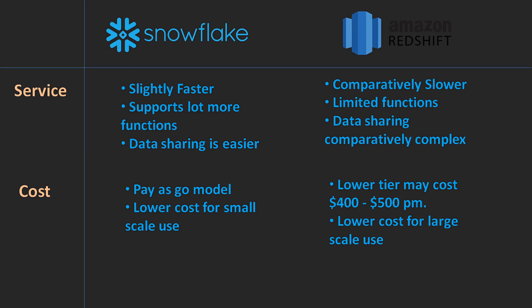This is where Amazon Redshift has an advantage. Even the lower tier may cost around 400 to 500 dollars per month for just one node. But when you're using it for large-scale storage with petabytes of data, Amazon Redshift will cost you less. Redshift uses a node-based pricing model — one node gets you a bill of four to five hundred dollars, and more nodes means a higher bill.